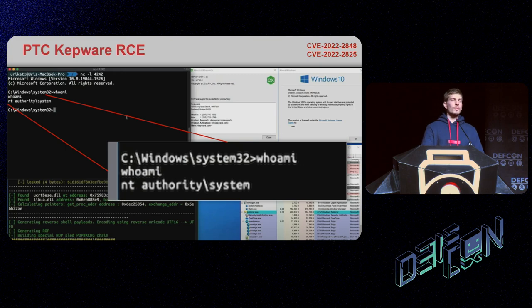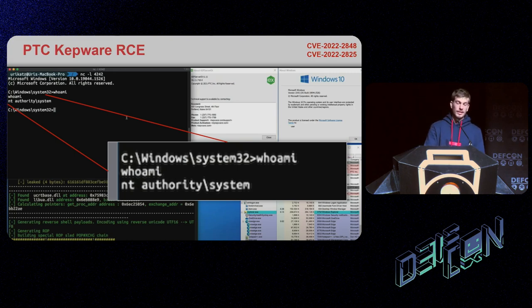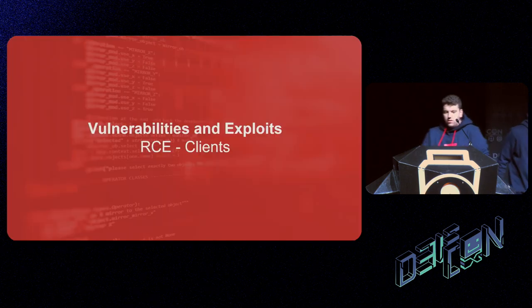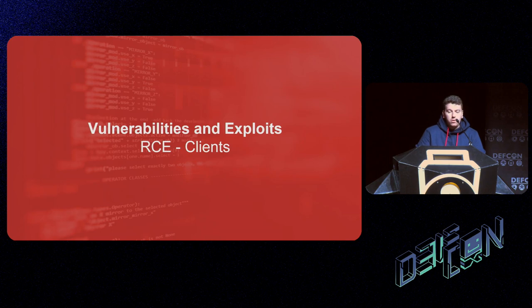We covered denial of service scenarios and remote code execution scenarios in OPC UA servers. Now let's see how to do remote code execution on clients. At this point we had exploited many different products — OPC UA servers and protocol gateways. But then we thought: let's try and look at clients as well.